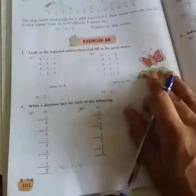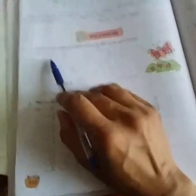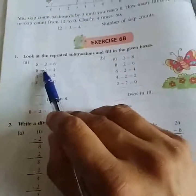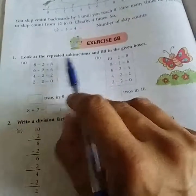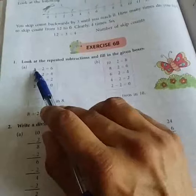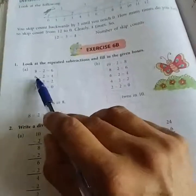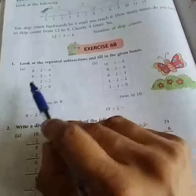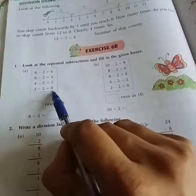Now, come to the next, to exercise 6B. Here it is given, as I told you, that division is repeated subtraction. So, here 8 is repeated out of 2. 8 minus 2 is 6. 6 minus 2 is 4. 4 minus 2 is 2. And 2 minus 2 is equal to 0.